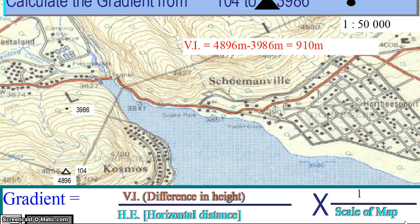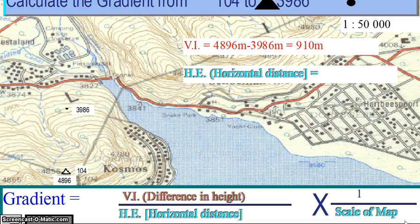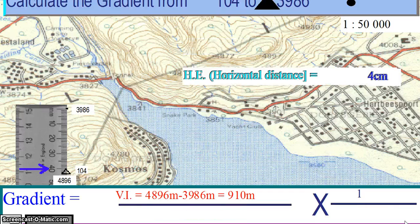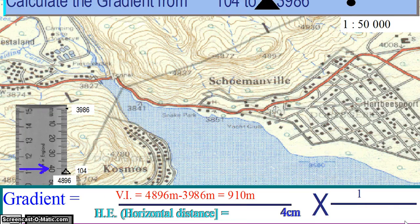Then calculate the horizontal distance between the two points. The distance between trig beacon 104 and spot height 3986 is 4 centimeters. Multiply the distance between these two points by the scale of the map.